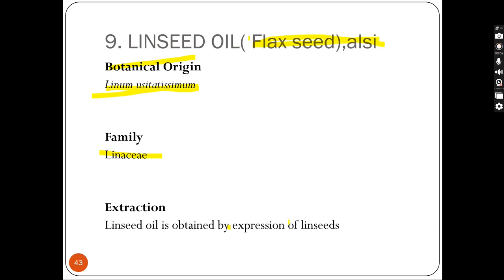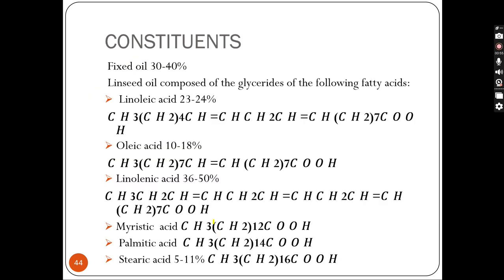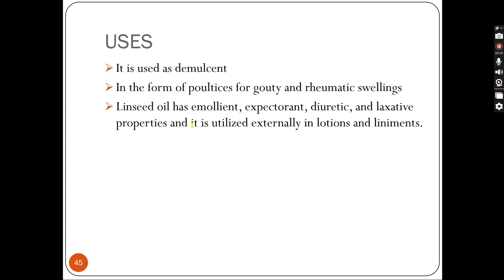The following are the main constituents found in linseed oil: linoleic acid 23 to 24 percent, fixed oil 30 to 34 percent, oleic acid 10 to 18 percent. This is the chemical formula of linoleic acid. Linoleic acid is 36 to 50 percent. Also, mystic acid, palmitic acid, and stearic acid are found in it.